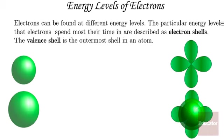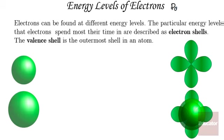To understand chemical bonding and chemical reactions, you need to understand more about electrons, and particularly about the energy levels of electrons. Electrons are found at different energy levels, and the levels that they spend their time in are called electron shells. The outermost shell is extremely important in chemical bonds and is called the valence shell. The nucleus is positively charged whereas electrons are negatively charged, so electrons are attracted to that positively charged nucleus.